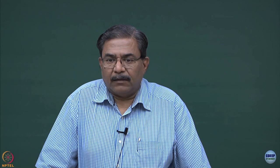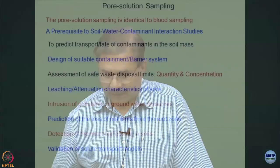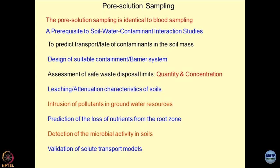Most industries — nuclear, thermal power, pharmaceuticals, and any type of manufacturing — require technical guidance on these steps, which also form part of environmental impact analysis. We have discussed containment systems and barrier systems. The best approach is to contain contaminants by designing good barriers in the soil mass so they do not spread into the entire porous media. Pore solution sampling helps in understanding whether the containment and barrier systems are functioning correctly.